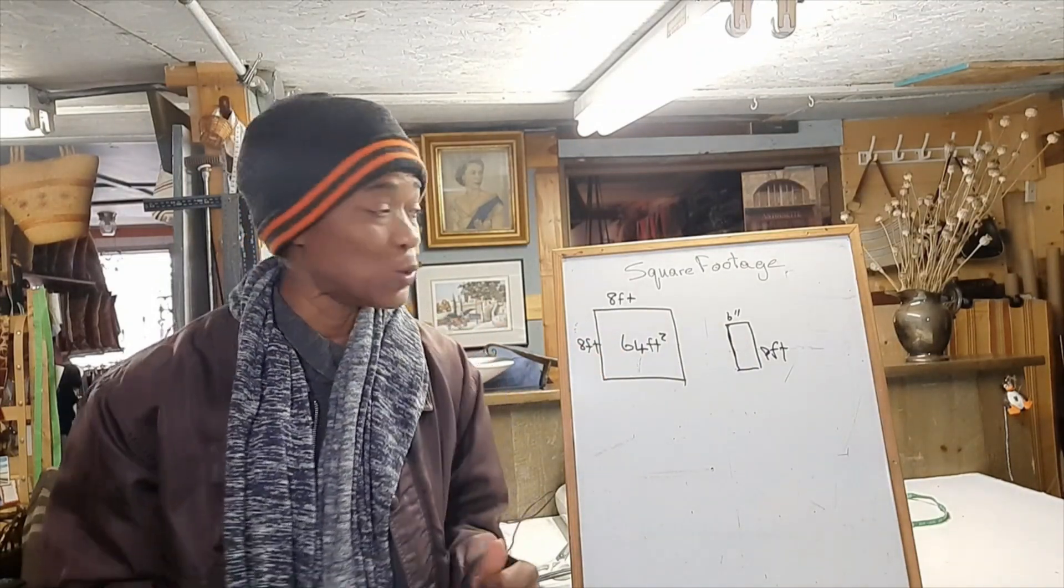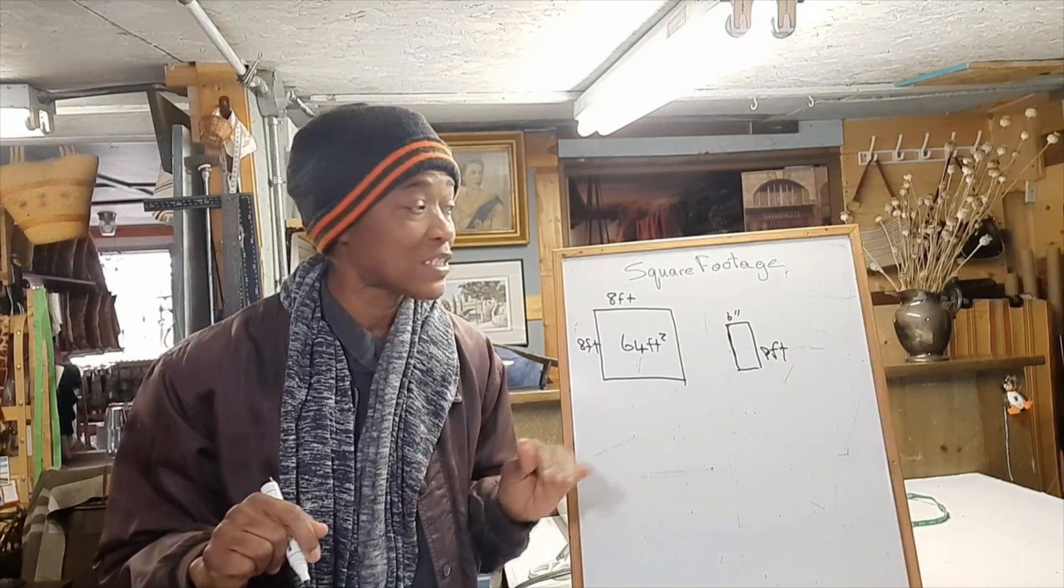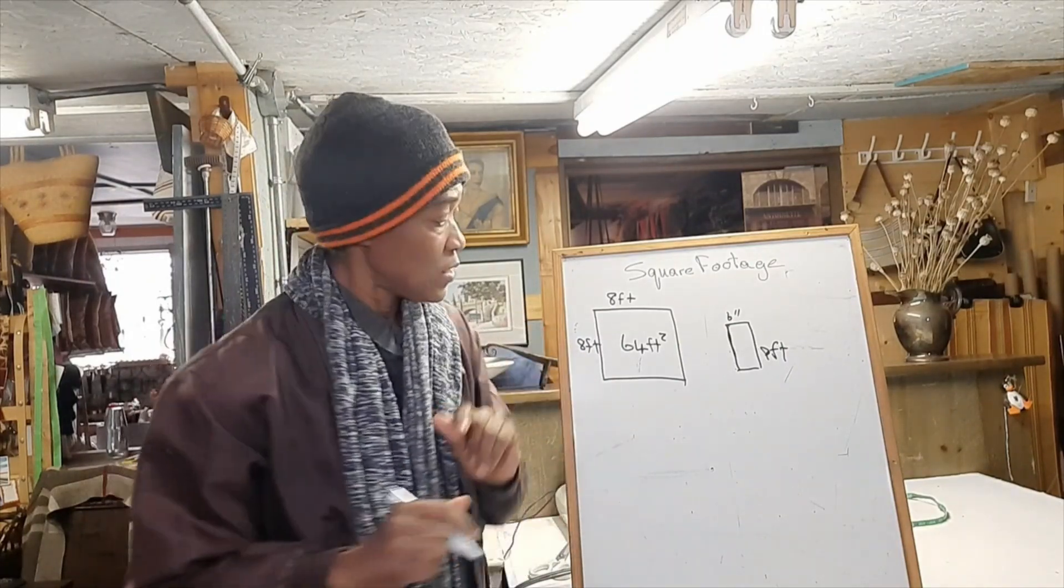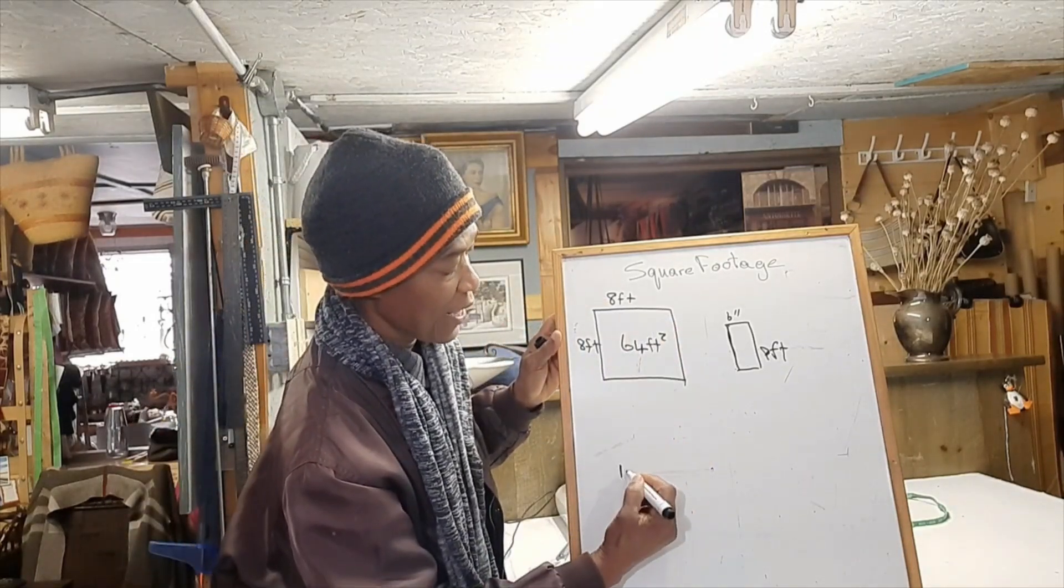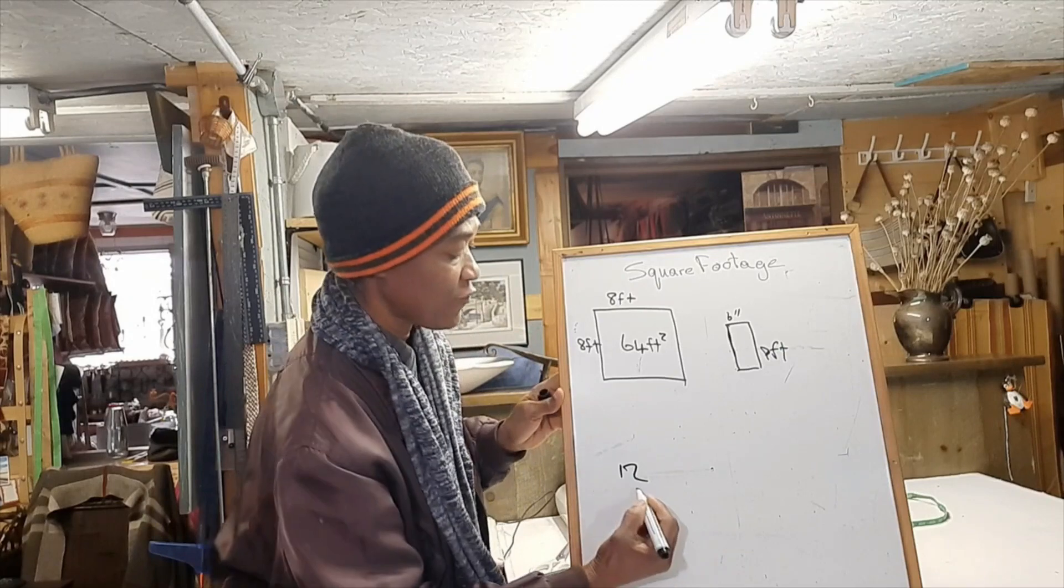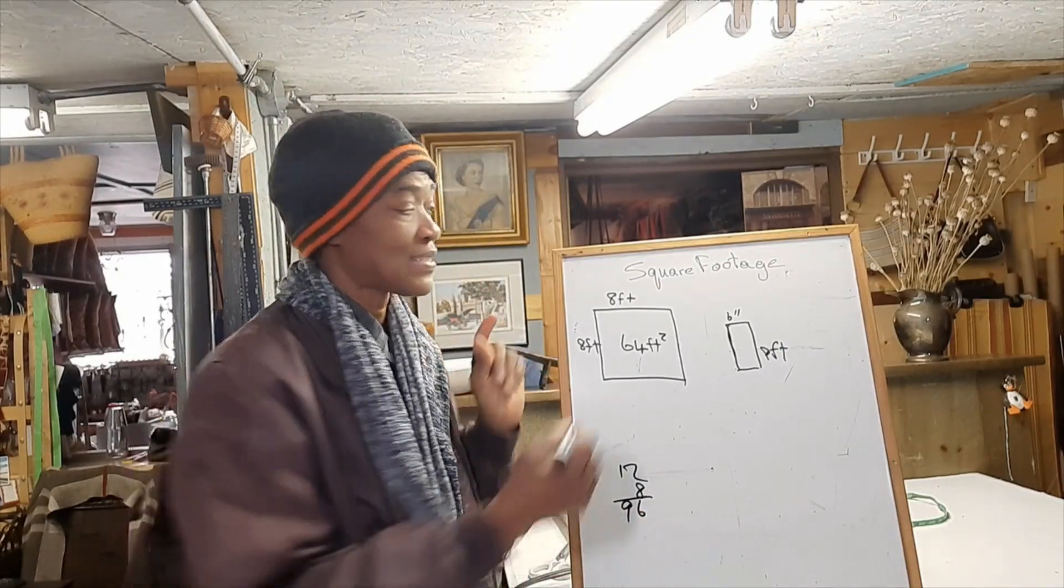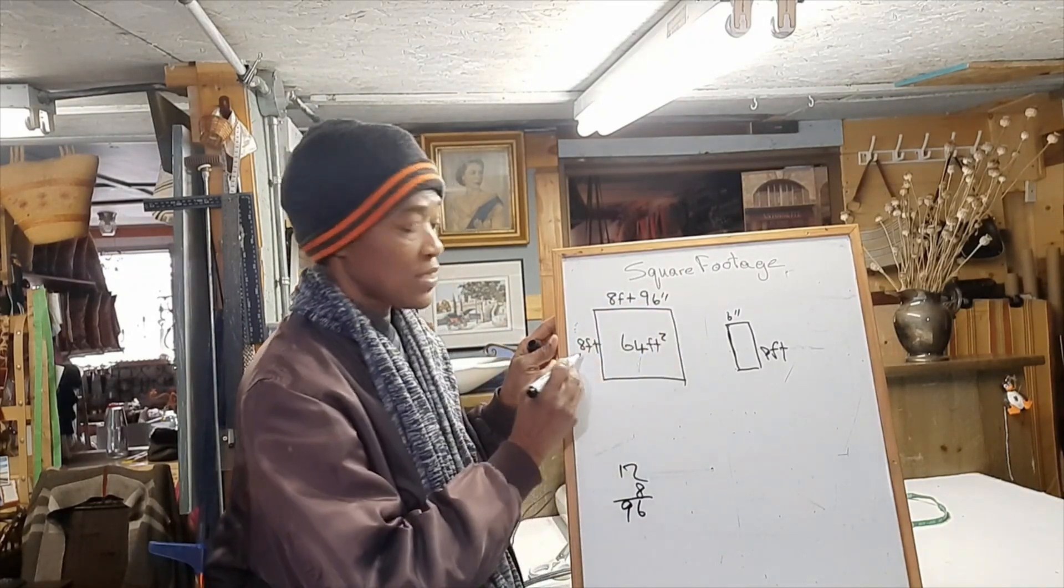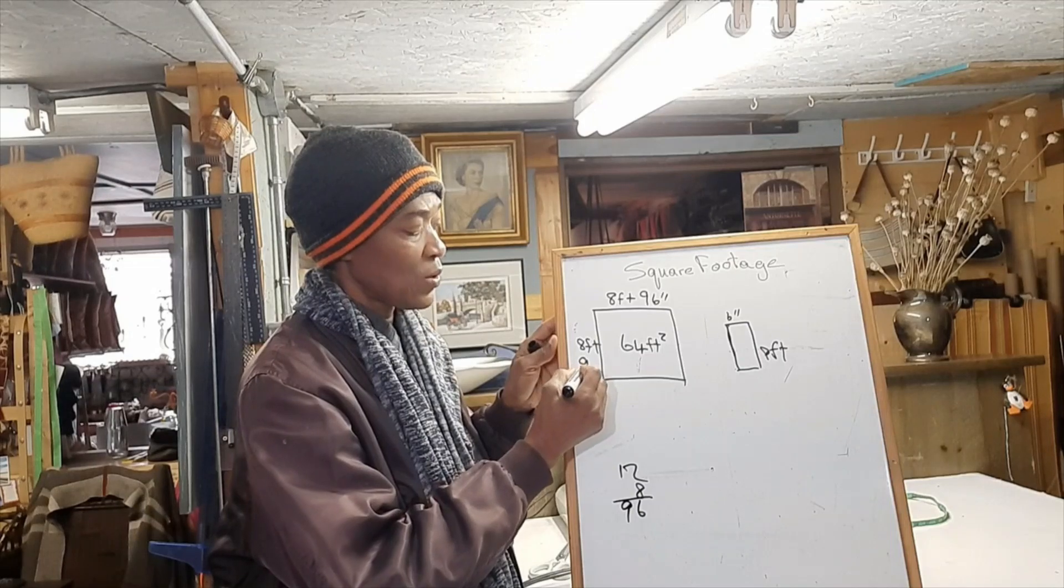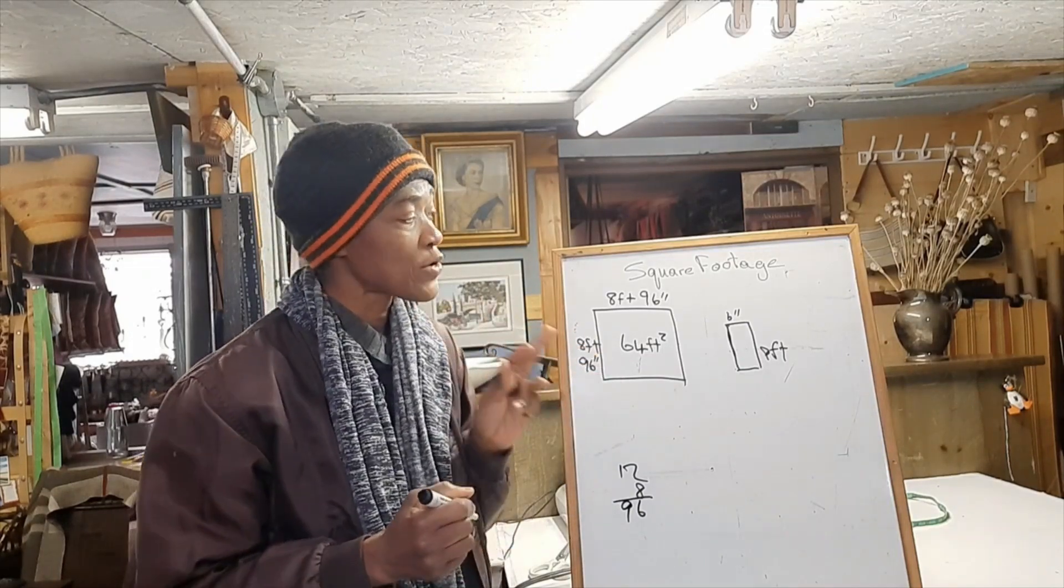This is what we have to do: we have to start by converting all our feet to inches. So let's start with 8 times 12, because there are 12 inches in a foot. So that's two eights, or 16—that's 96 inches. So if this is 96 inches, it means then that this also is 96 inches.